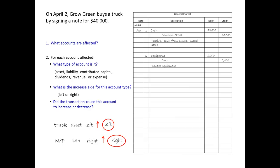We're ready to journalize. Leave a blank row after the previous entry. Enter the date, even though it's the same as the previous transaction. Enter the account getting the left side of the entry, lined up against the left side of the column, with $40,000 in the left number column. Enter note payable indented to the right, $40,000 in the right number column. Enter a brief explanation.